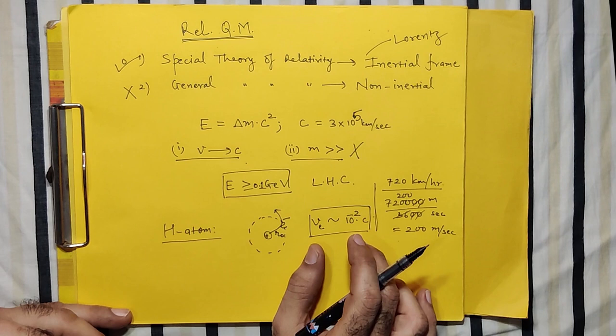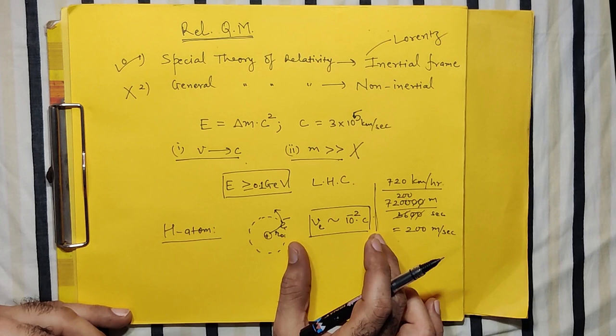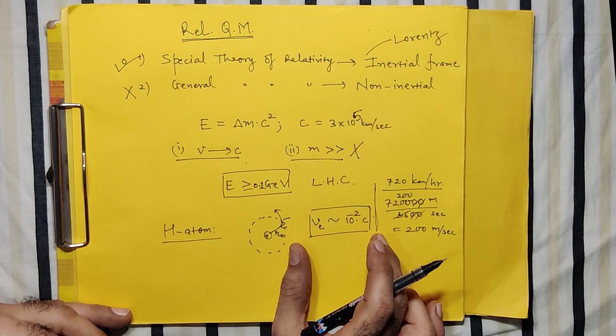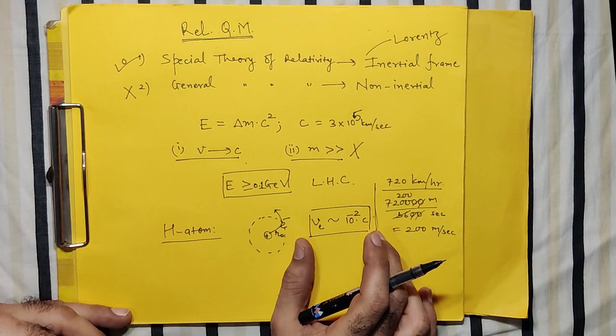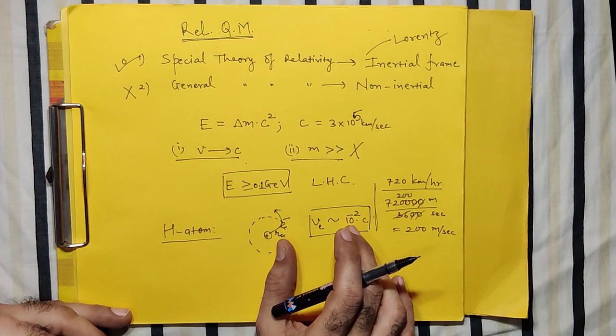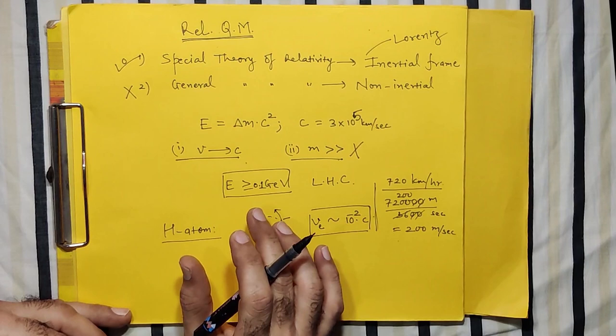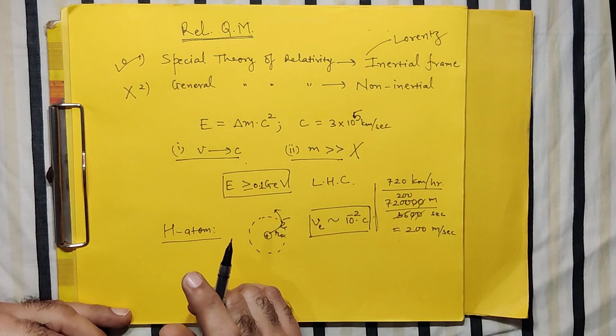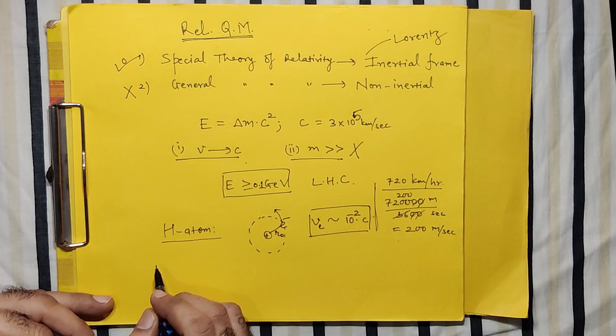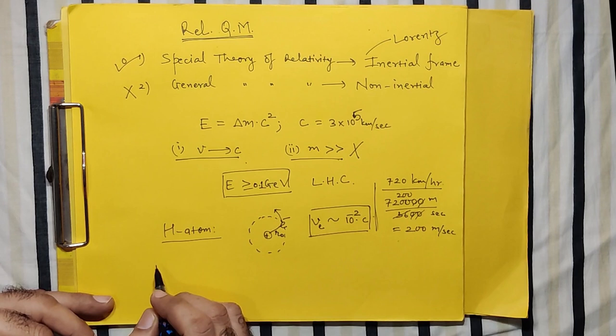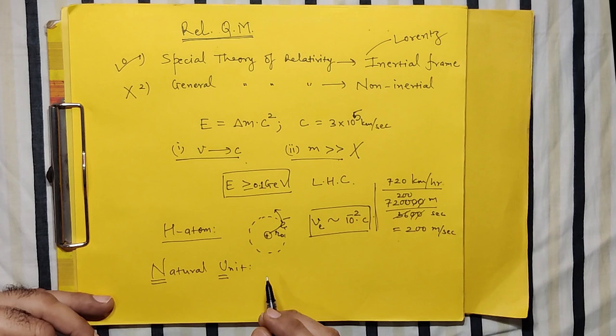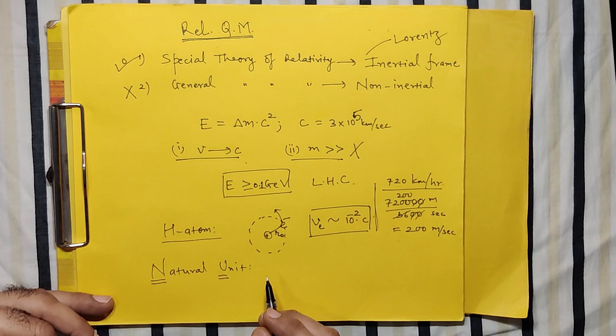We need to go beyond non-relativistic quantum mechanics. We have to develop a general formalism to deal with situations where the speed is very large. Based on that, we try to infer different possibilities — that is unit number 1. But before we jump into deriving mathematical equations, let us recall some conventions for the units and symbols we will be using. We first discuss what we call the natural unit system.